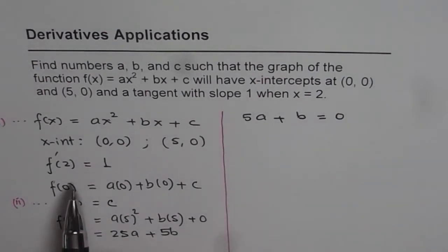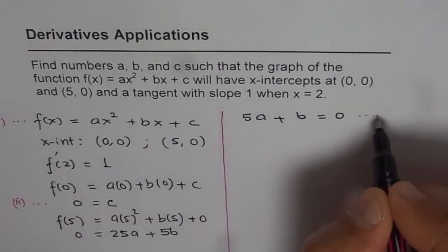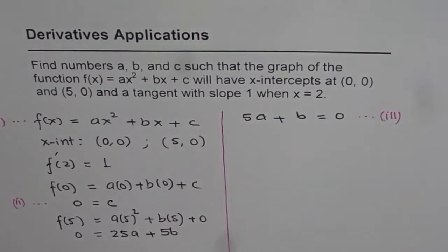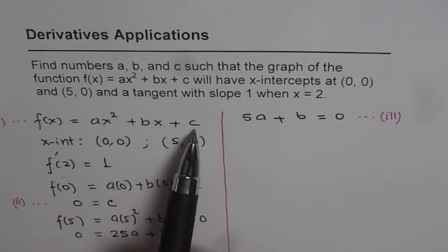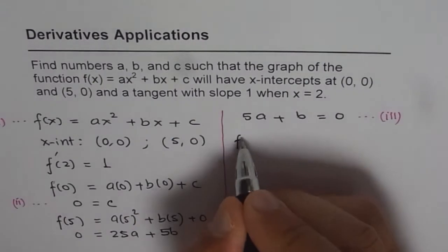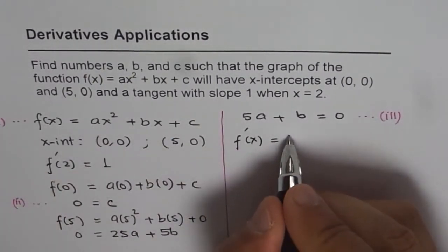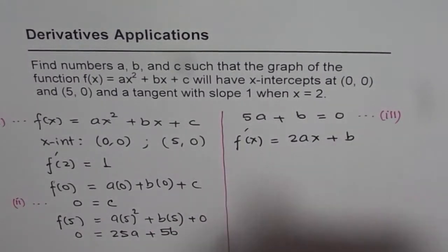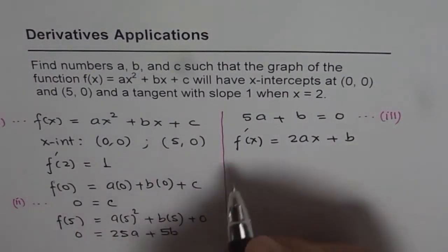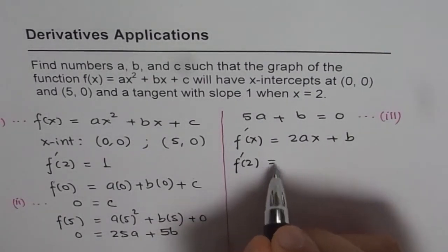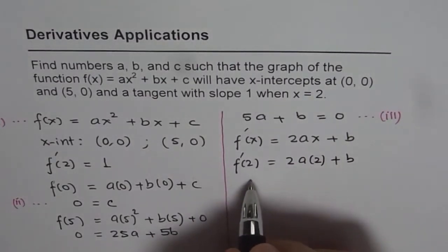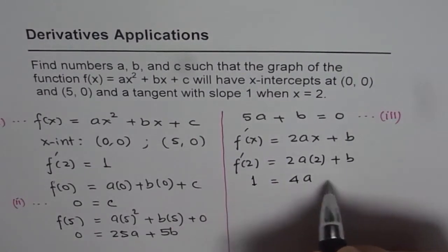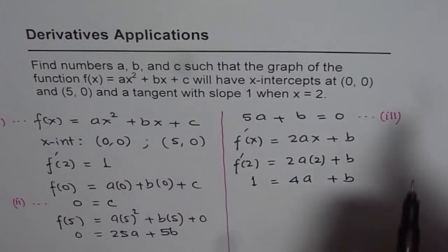Now the third condition given to us is f'(2) equals 1. So the function is f(x) = ax² + bx + c, where c is 0 for us. So f'(x) is equal to 2ax + b. What we are given is, at x = 2, that means at f'(2), this should be 2 × a × 2 + b. The value of f'(2) is 1. So we get 1 = 4a + b. So we get another equation.